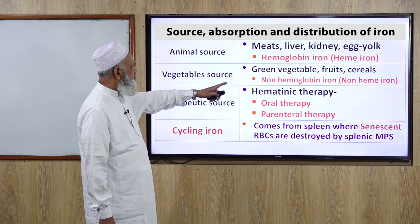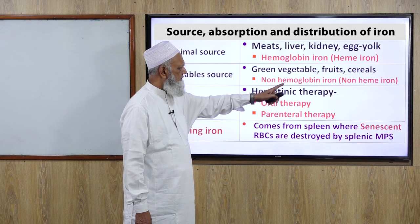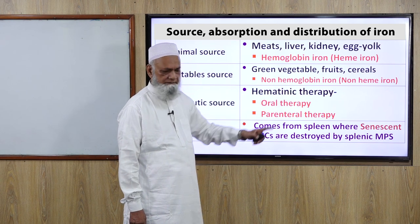Vegetable sources include green vegetables, fruits, and cereals. Iron from these sources is called non-hemoglobin iron or non-heme iron.